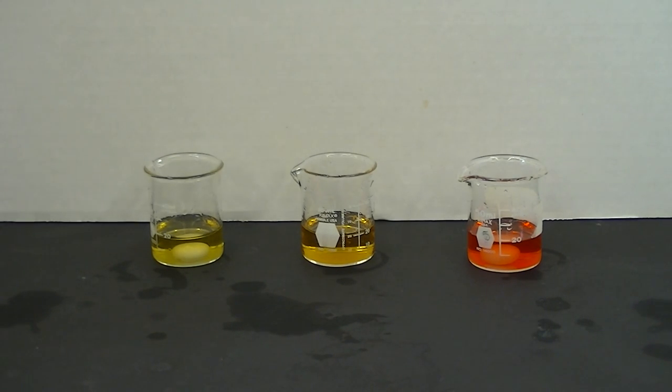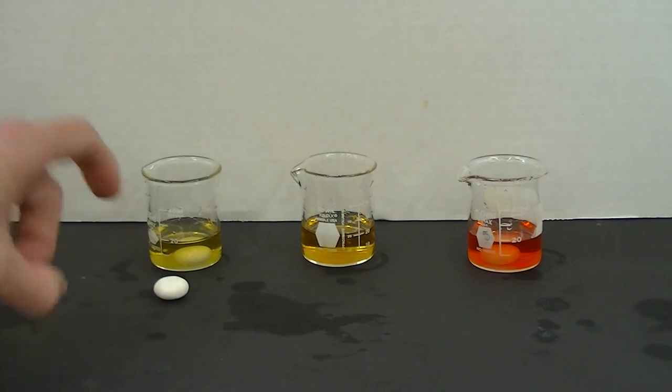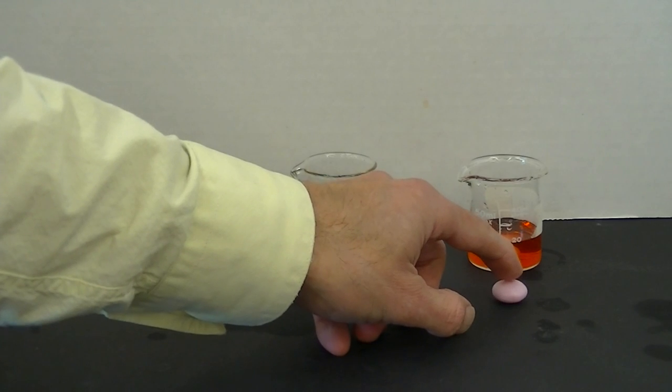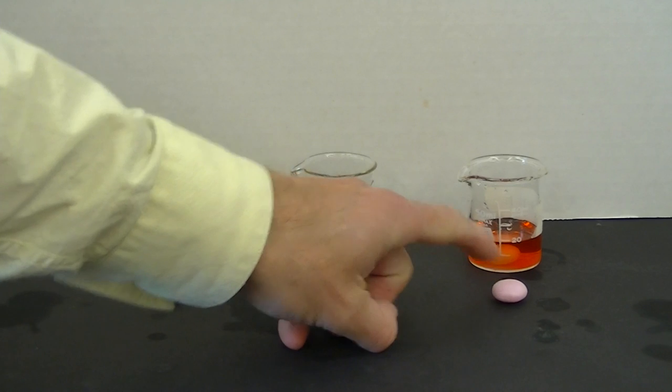Well how can that be? They're both white Mentos candies. Well here's the trick. In this beaker is placed a white mint Mentos candy and in this beaker is placed a pink strawberry Mentos candy, but you'll notice it wasn't pink when I placed it in there, it was actually white.